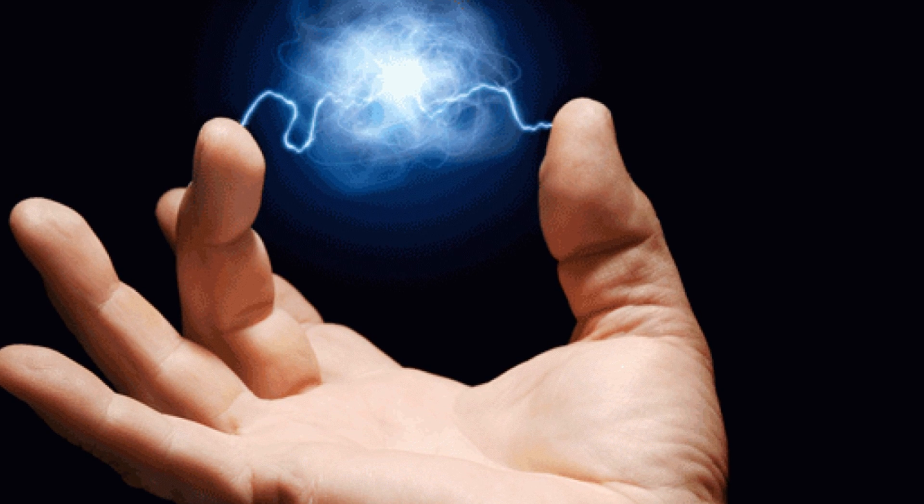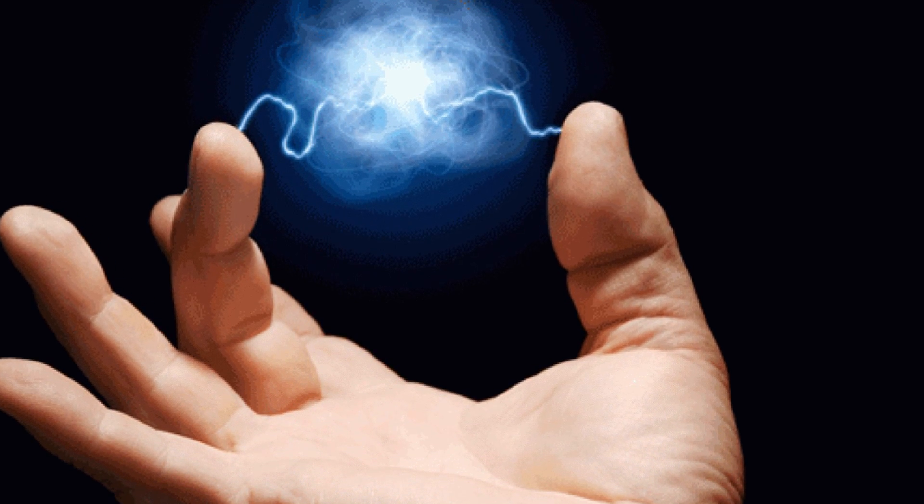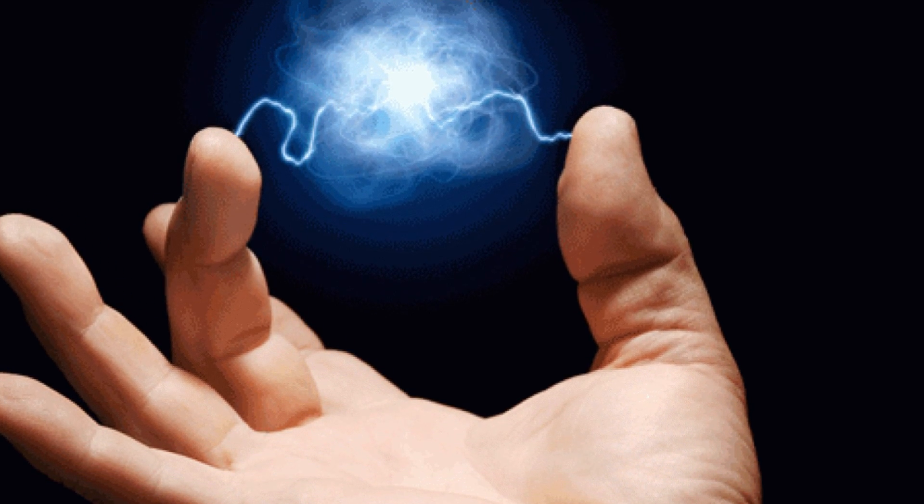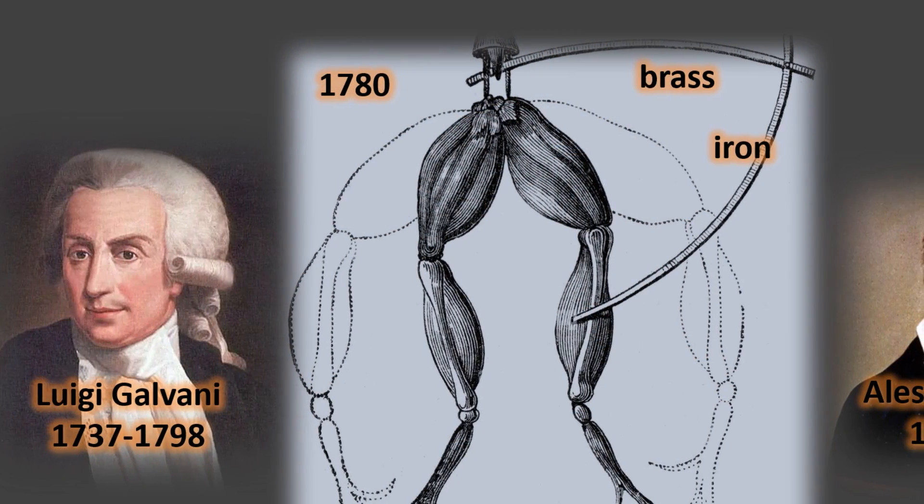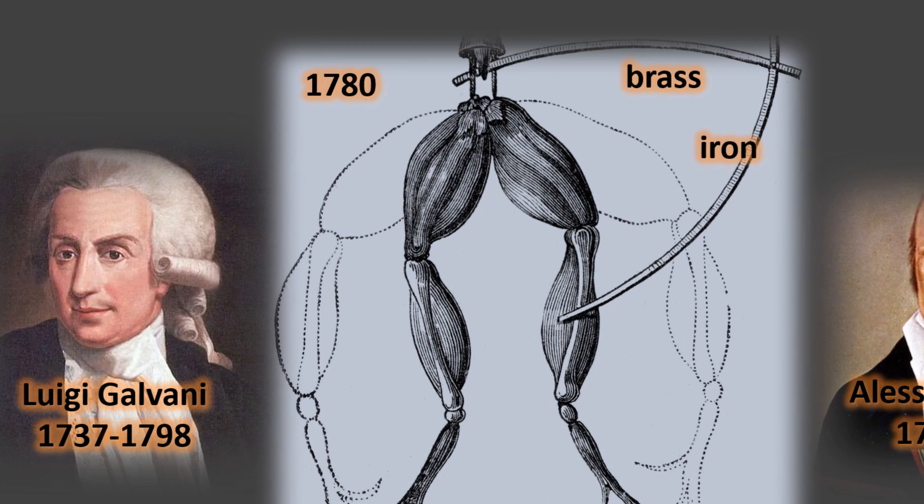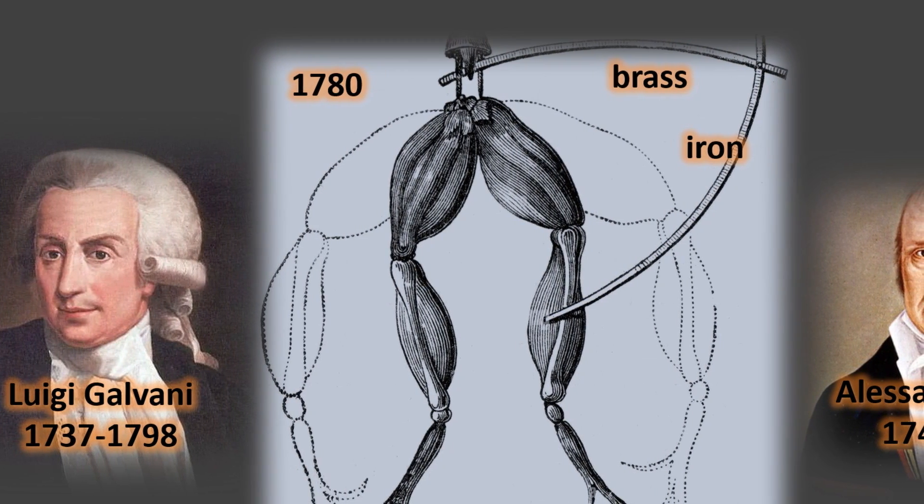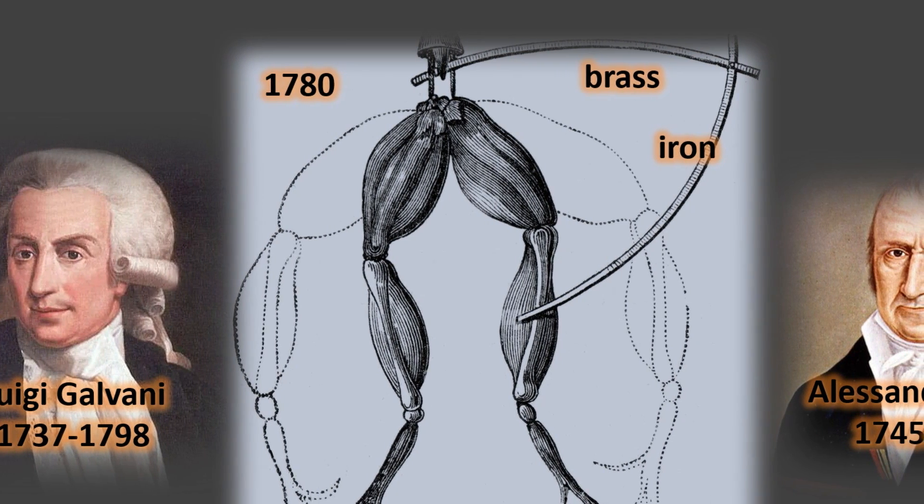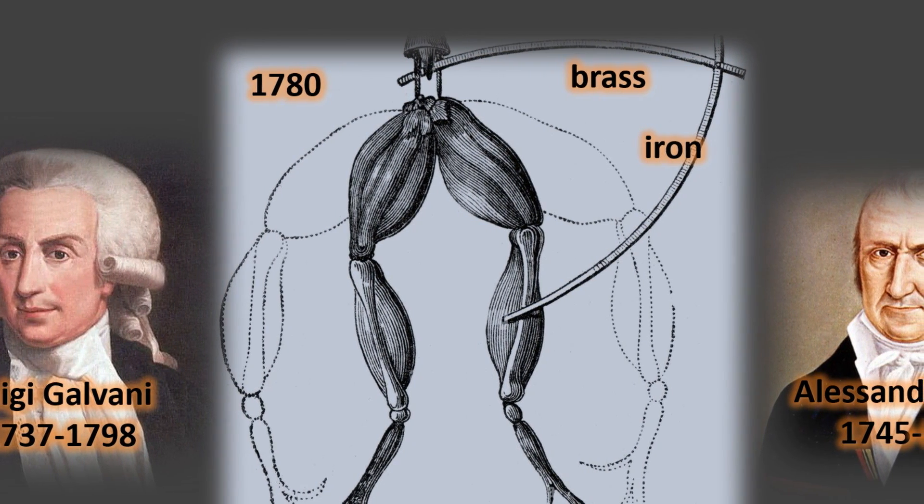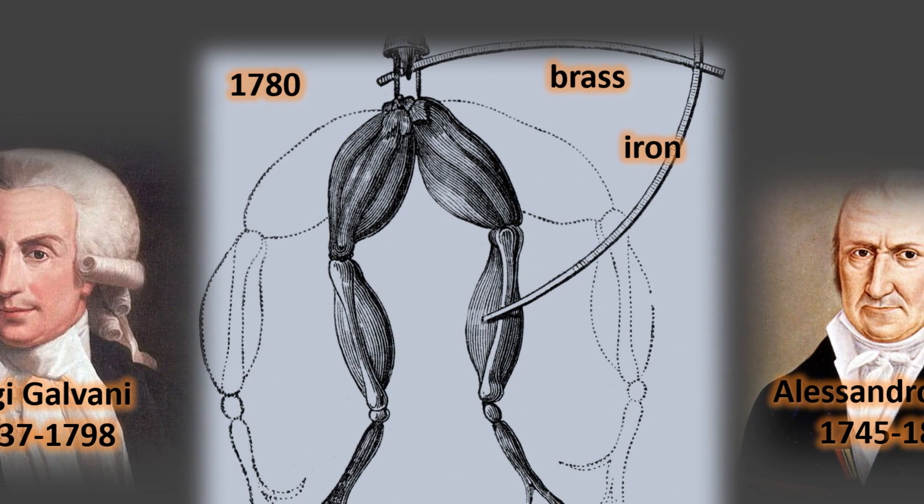Before 1800, all man-made electricity was static. The discovery of continuous flow of electricity came as a complete surprise. Luigi Galvani, a physician from Bologna, Italy, used to hang dead frog legs on brass hooks to dry around 1780. When he touched one with a piece of iron in contact with the brass hook, the frog's leg twitched.